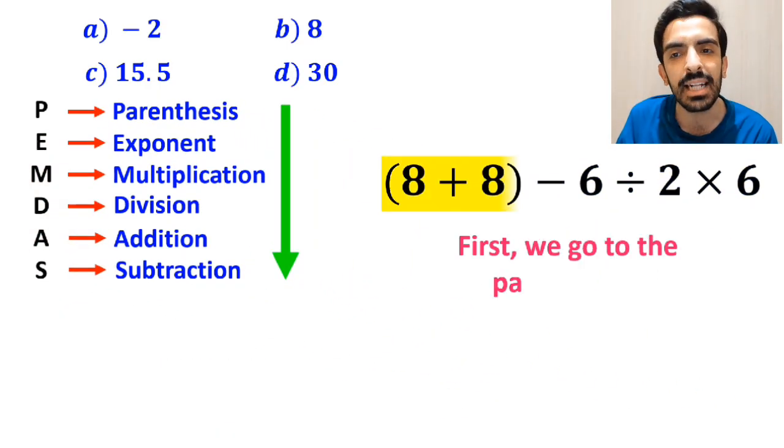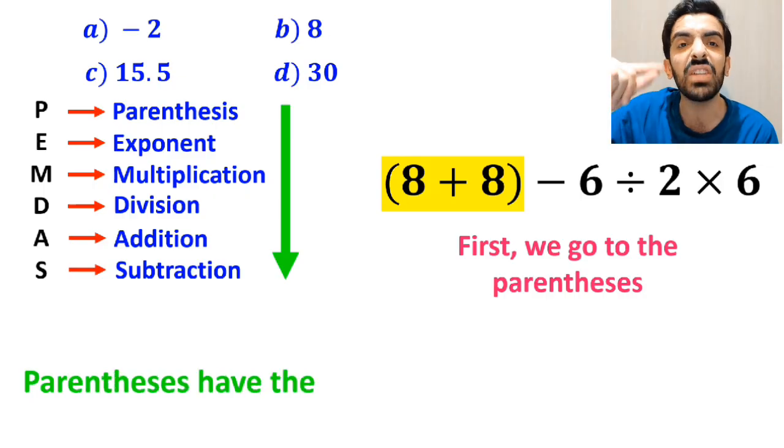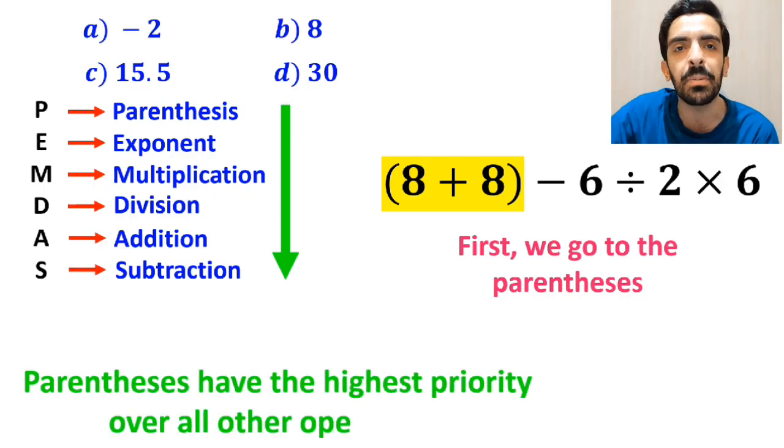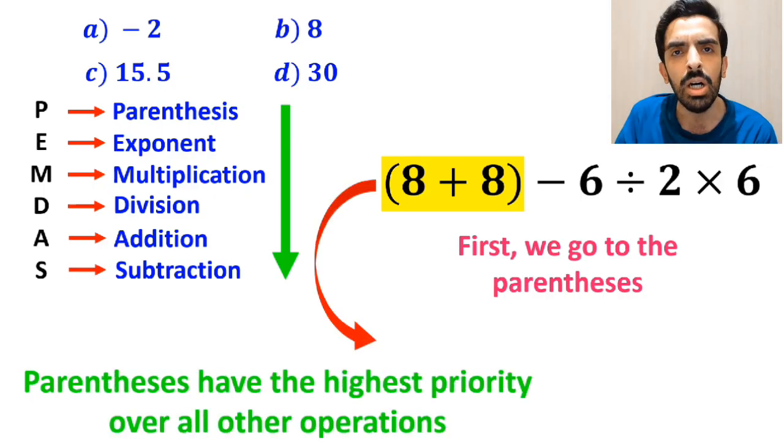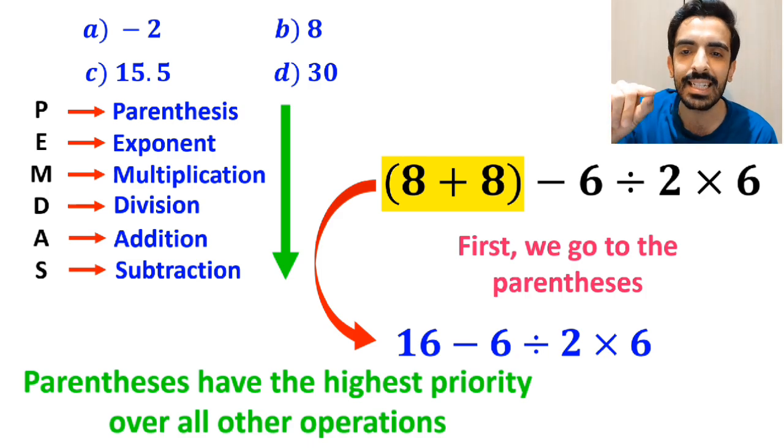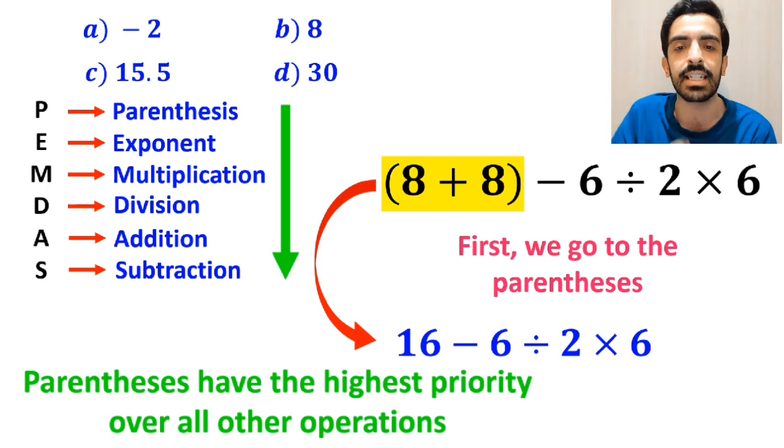Okay, first we go to the parenthesis. Because according to the PEMDAS rule, parenthesis have the highest priority over all other operations. So, we can write this expression as 16 minus 6 divided by 2, then times 6.